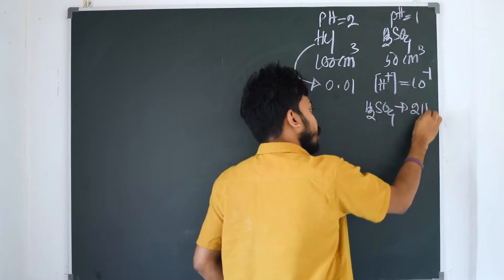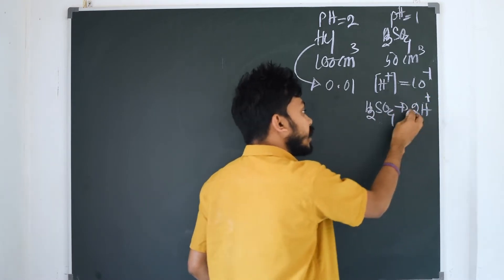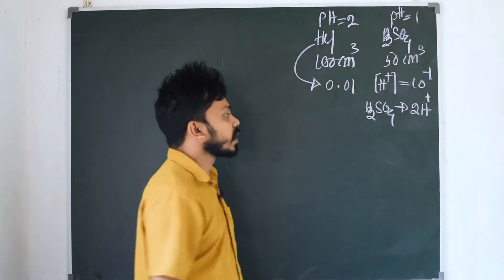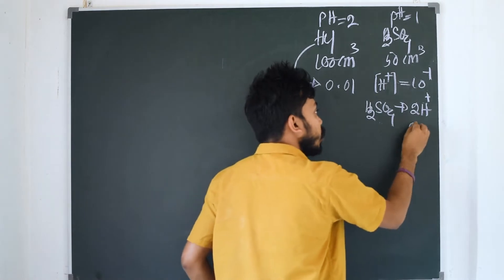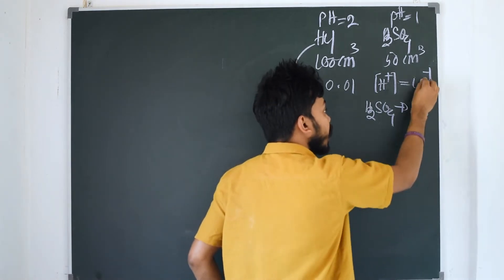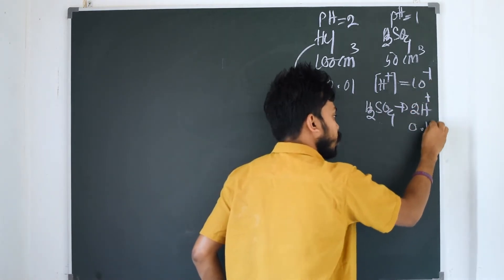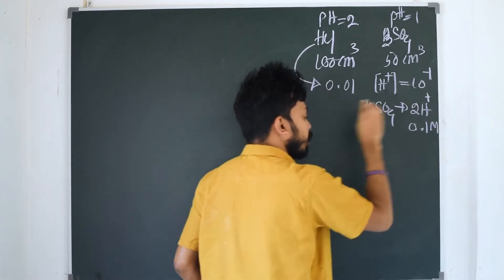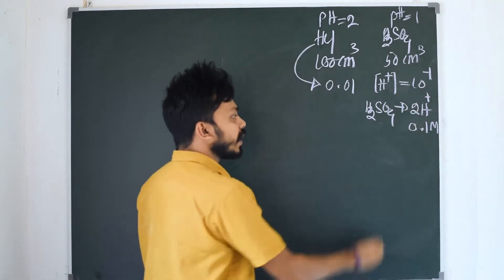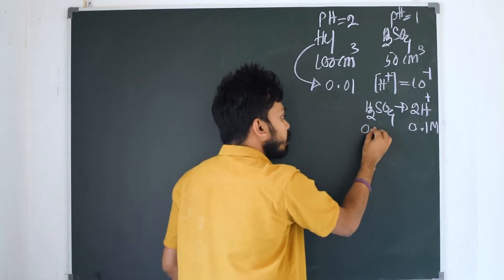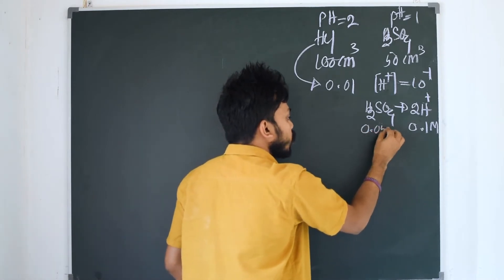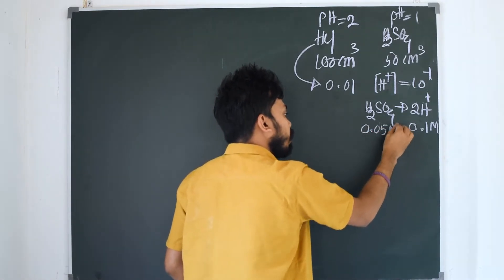What is H⁺ total? We'll be adding H⁺ acid-sulfate. We'll make H⁺ total plus 1, 2. Then we'll take H⁺.